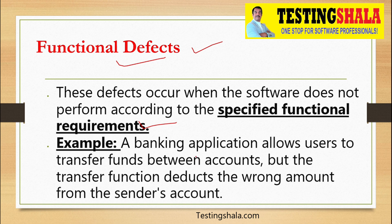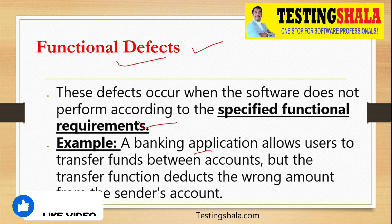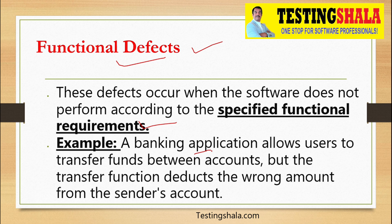For example, in a bank application that allows the user to transfer funds from one account to another, during the transfer operation the system deducts the wrong amount from the sender's account. If the sender tries to send 100 rupees but the system deducts 1000 rupees, there is a functional issue where the calculation is completely wrong. These are functional defects — the software is not performing as specified in the functional requirements.